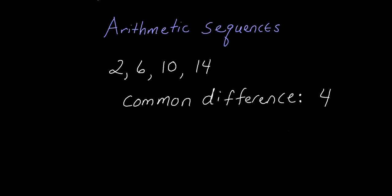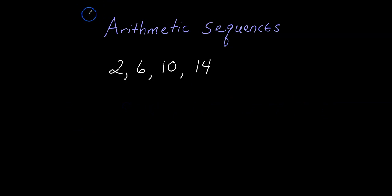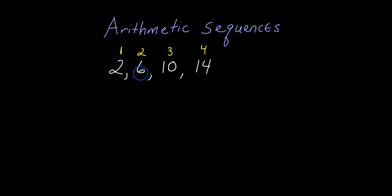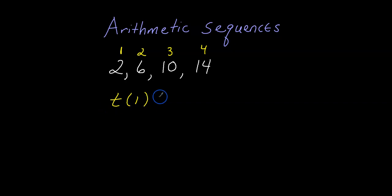Now let's go over some notation. The numbers in the sequence — 2, 6, 10, 14 — are called the term values. The positions 1, 2, 3, 4 are called the term numbers. For example, term number 2 has a value of 6, and term number 4 has a value of 14. You'd write term 1 as T(1), and its value is 2.